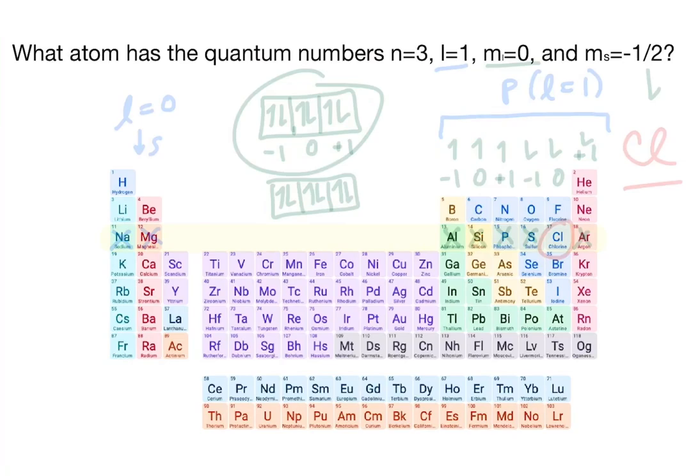Let's practice identifying an element from its quantum numbers using the periodic table. This question asks us, what atom has the quantum numbers n equals 3, l equals 1, m sub l equals 0, and m sub s equals negative 1 half?